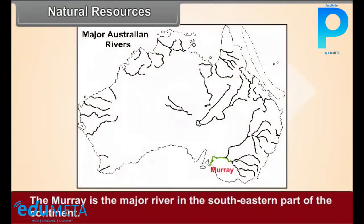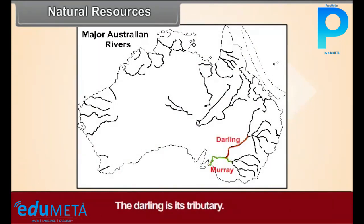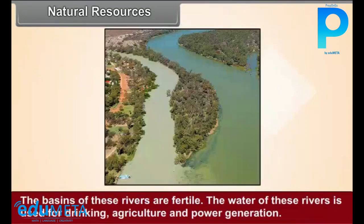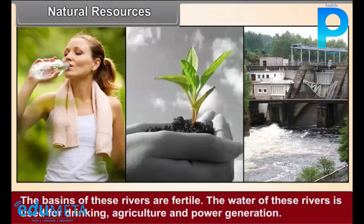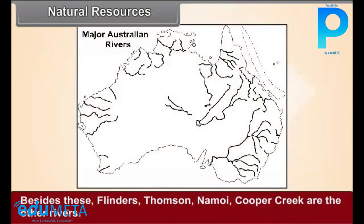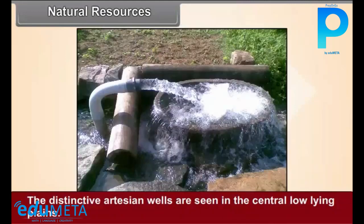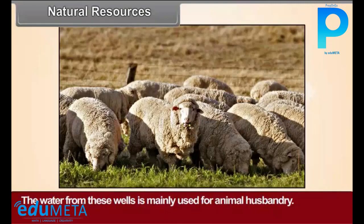Natural Resources — Water Resources: The Murray is the major river in the south-eastern part of the continent. The Darling is its tributary. The basins of these rivers are fertile. The water of these rivers is used for drinking, agriculture, and power generation. Besides these, the Flinders, Thompson, Namoi, and Cooper Creek are other rivers. Distinctive artesian wells are seen in the central low-lying plains, and the water from these wells is mainly used for animal husbandry.